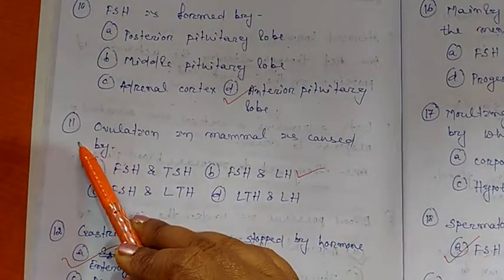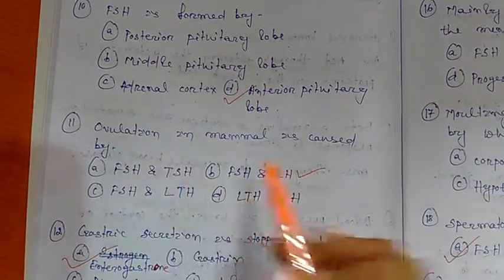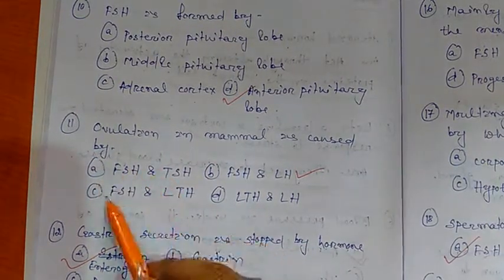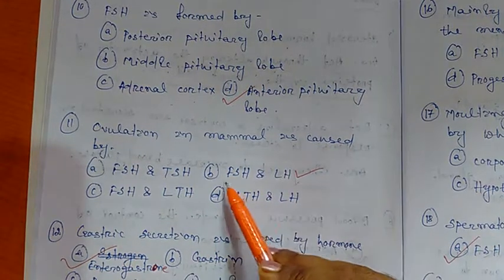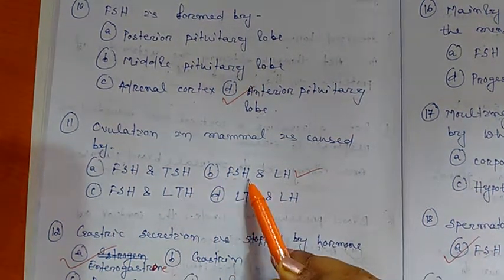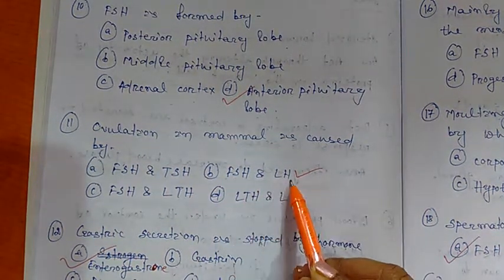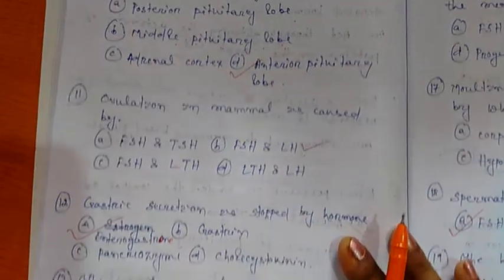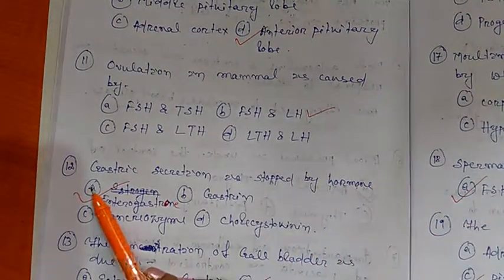Next question number 11. Ovulation in mammals is caused by, there are four options. Right option is FSH, that is follicle stimulating hormone, and LH, that is luteinizing hormone.